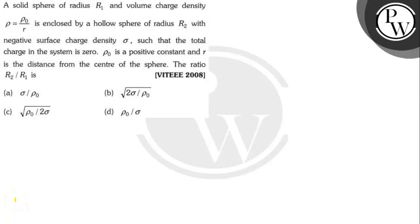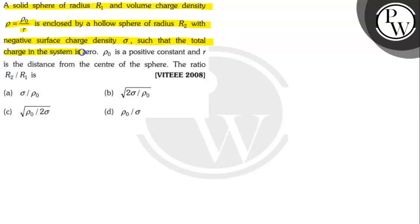Hello. Let's read the question. A solid sphere of radius R1 and volume charge density P equals to P0 divided by R is enclosed by a hollow sphere of radius R2 with negative surface charge density sigma, such that the total charge in the system is 0. P0 is a positive constant and R is the distance from the center of the sphere. So the ratio R2 to R1 is what?